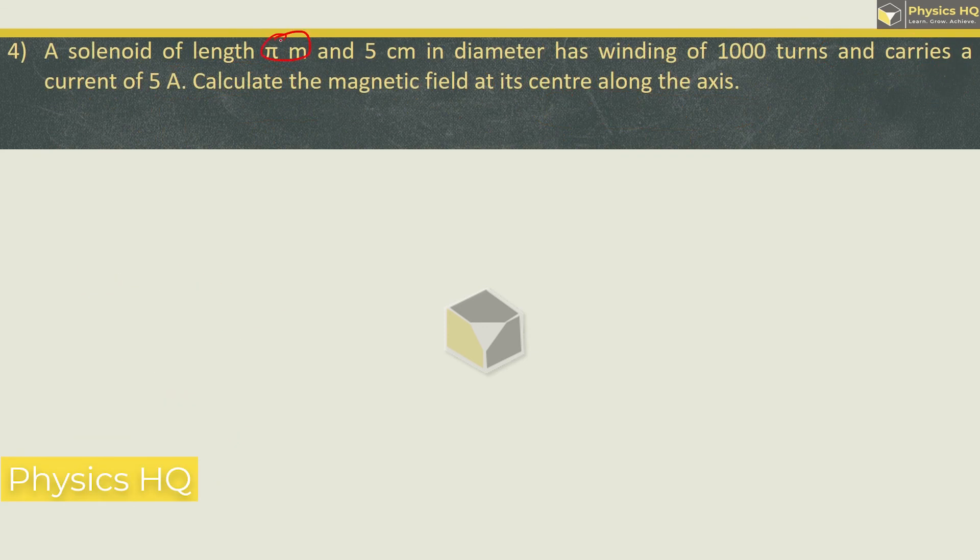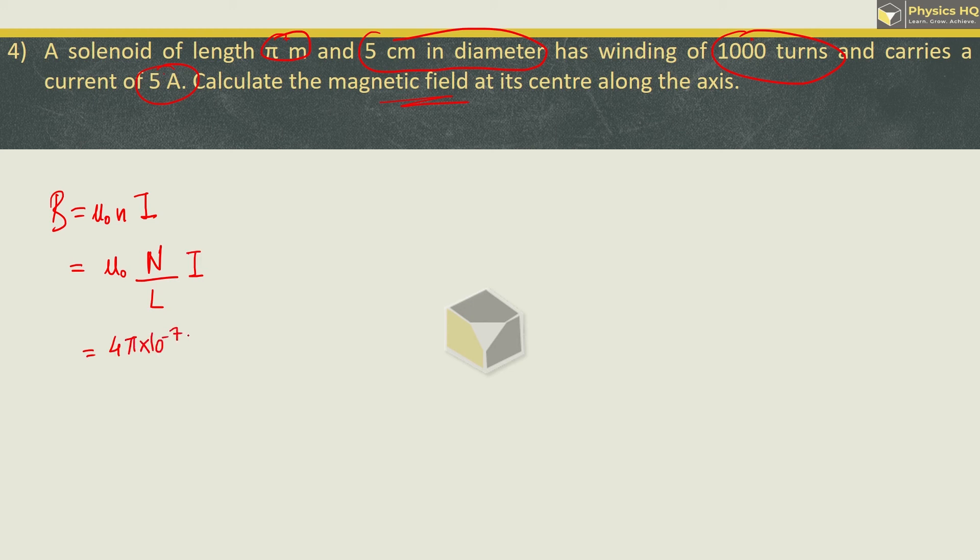A solenoid of length π meter and 5 cm in diameter has a winding of 1000 turns and carries a current of 5 ampere. Calculate the magnetic field at its center along the axis. This is a simple formula: B equals μ₀ n i. Now this small n is total number of turns divided by the total length. μ₀ is 4π × 10⁻⁷, total number of turns is 1000, length is π and current is 5 ampere. π cancels, 4 times 5 is 20, so the magnetic field after simplification is 2 × 10⁻³ tesla.